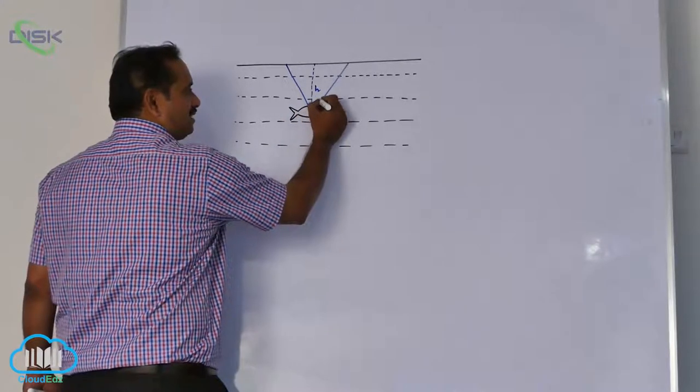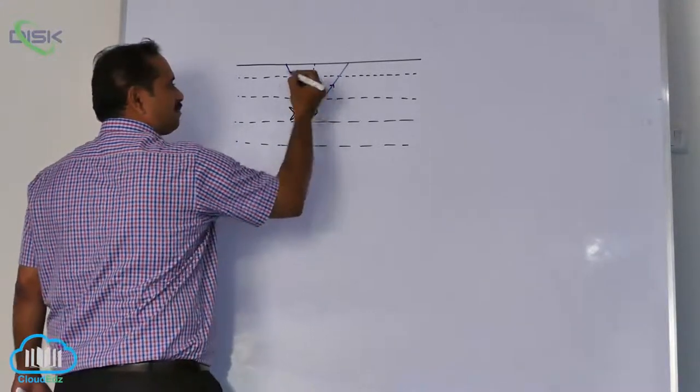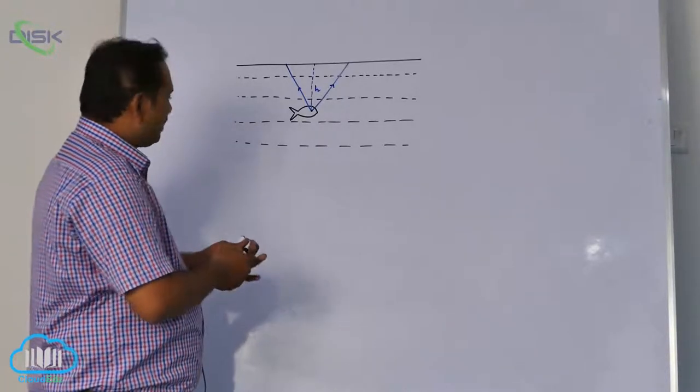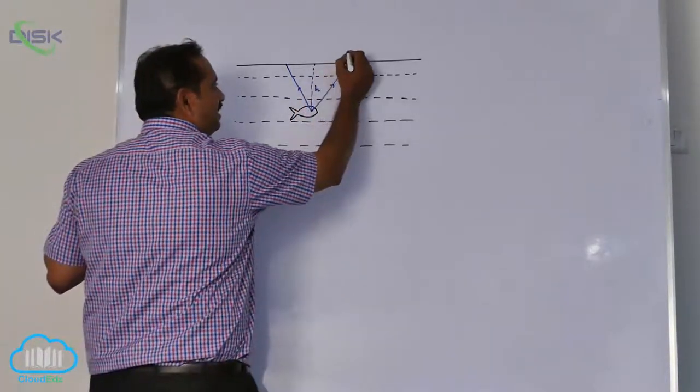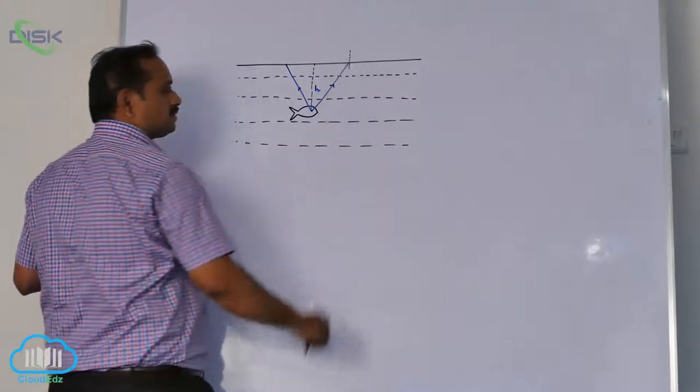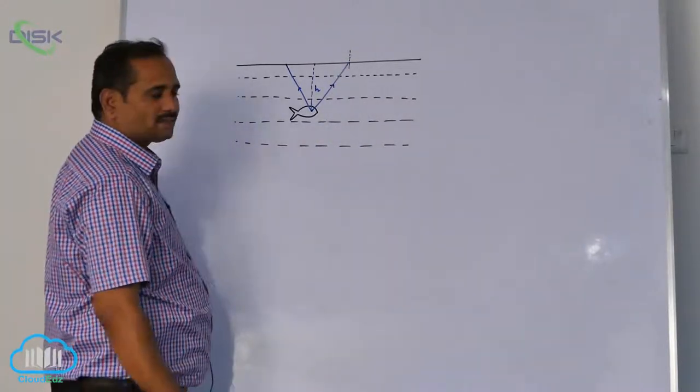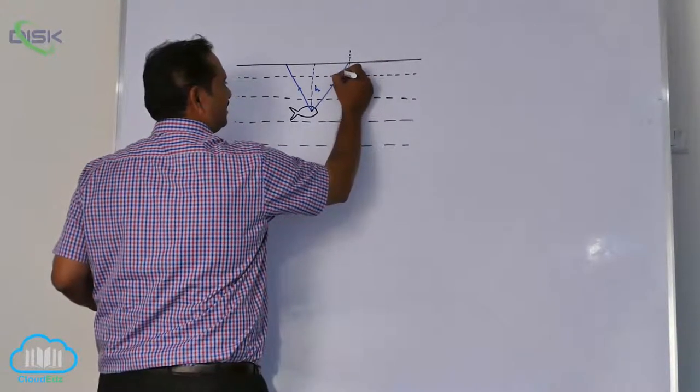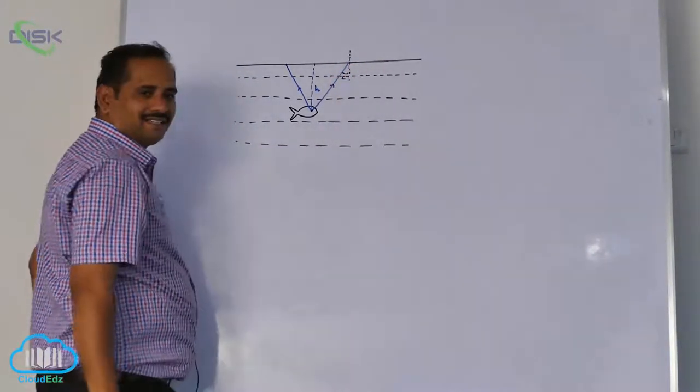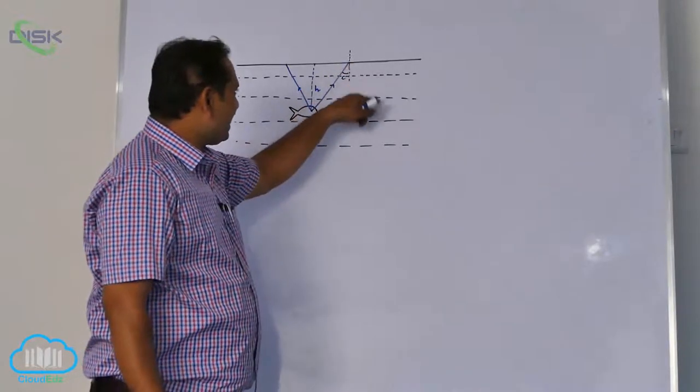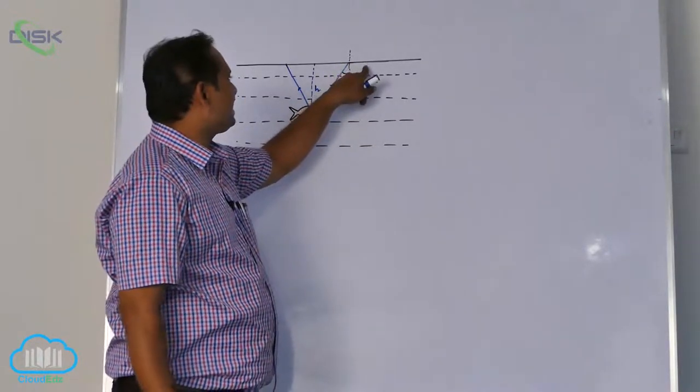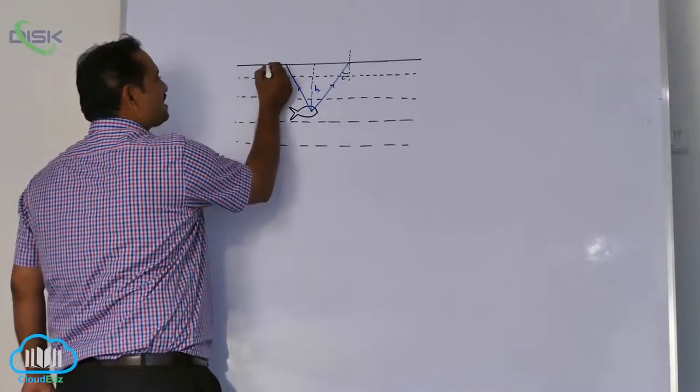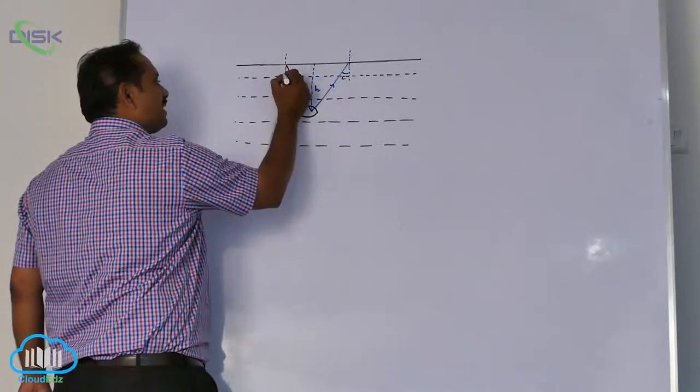This is the object. Fish is object. Light is coming like this. It can see the world up to critical angle. Why? Because more than critical angle it comes back, but at critical angle it is refracting at the surface. Here also you can understand like this. This also should be critical angle.